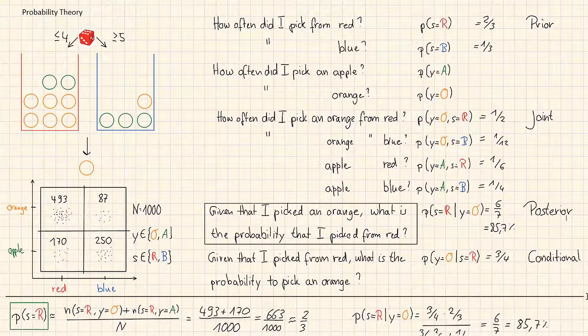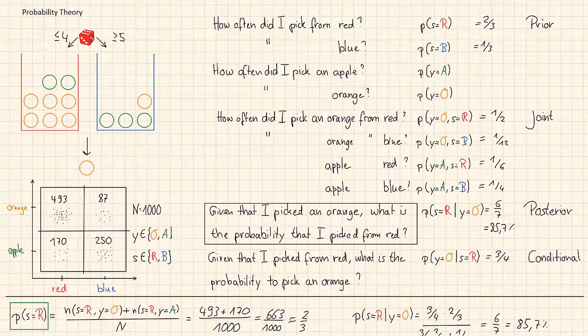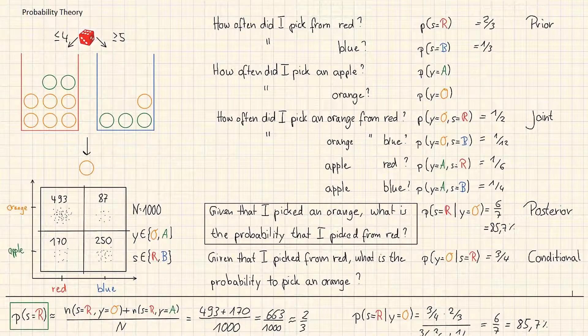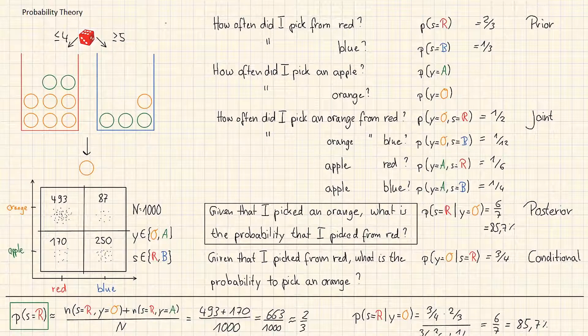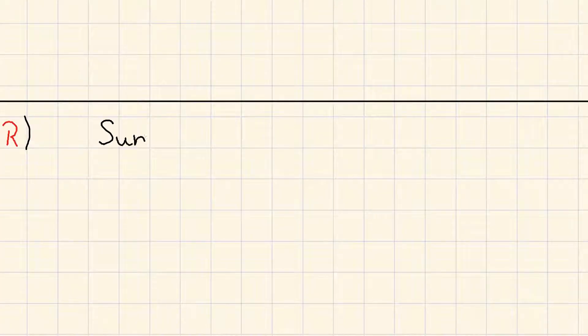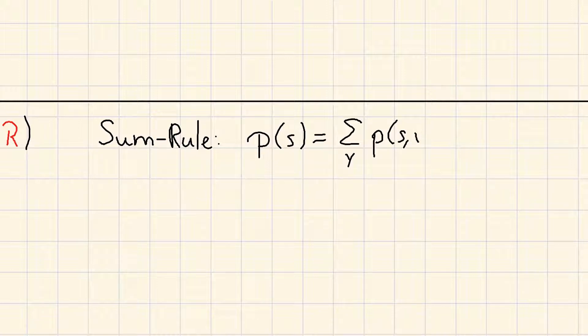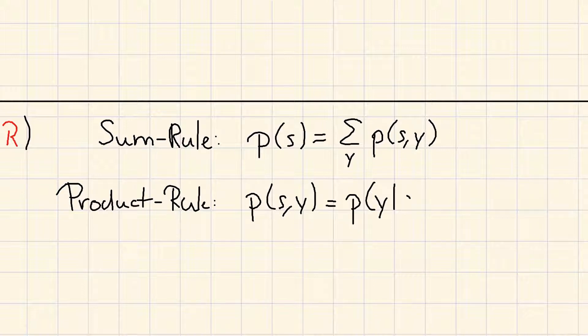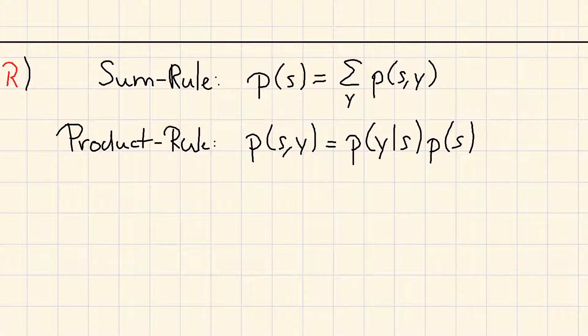Alright. To sum everything up in the not explicit form, we have three important rules that we need throughout the whole Machine Learning 1 course. The sum rule, the product rule, and Bayes' rule.